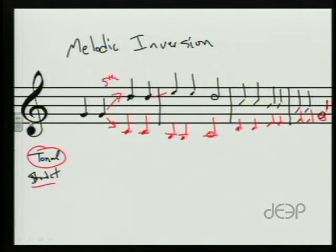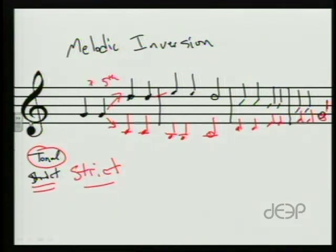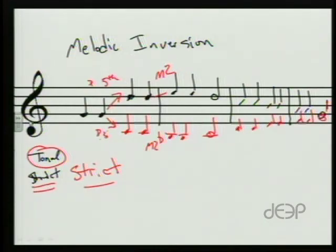A strict melodic inversion — that's S-T-R-I-C-T — would be when I take a look and I go, okay, that's a perfect fifth up, so I want to go a perfect fifth down. That's a major second up, so I want to go a major second down. That would make that a B flat, and so on. Typically, tonal inversion is the one that we use the most often, but we certainly can use strict inversion too.